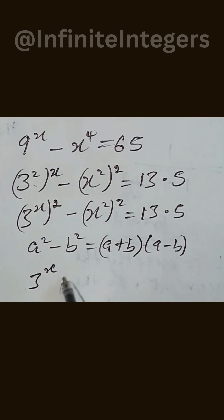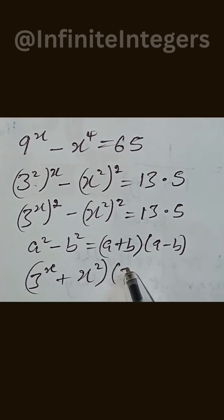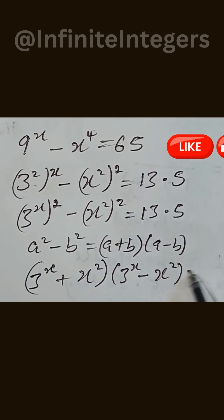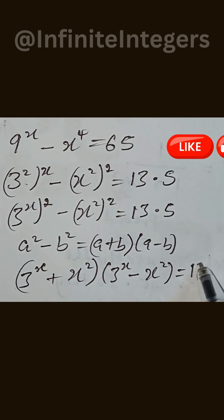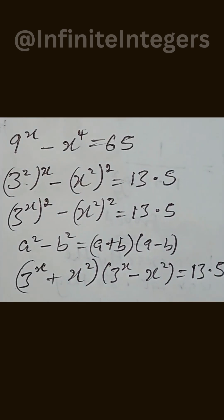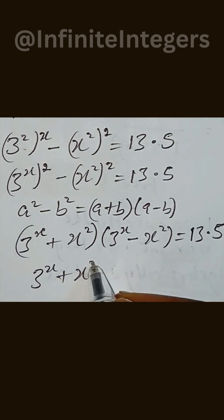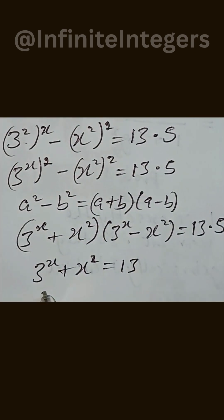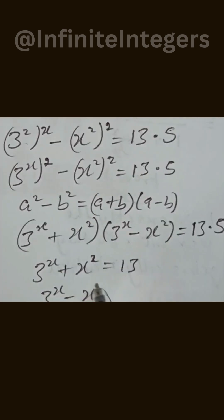This becomes: 3 to the power of x plus x to the power of 2, in brackets, multiplied by 3 to the power of x minus x to the power of 2, in brackets, equal to 13 multiplied by 5. We can now equate the first factor to 13 and the second to 5. So: 3 to the power of x plus x squared equals 13, and 3 to the power of x minus x squared equals 5.